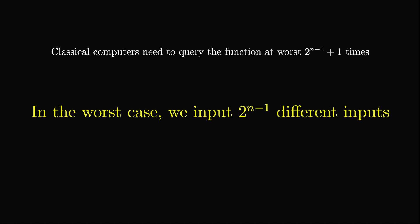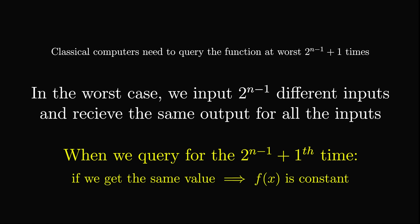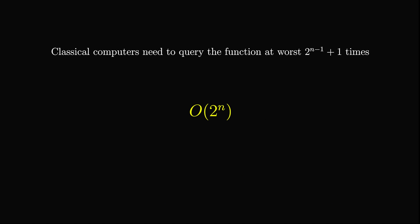For a classical computer to solve this problem, we need to query the oracle at worst 2 to the power of n minus 1 plus 1 times. Since there are 2 to the n possible inputs, in the worst case scenario we may input half the possible inputs and receive the same output for all of them, meaning we must query the oracle one more time to confirm if the function is constant or balanced. This gives us a big O complexity of 2 to the power of n.